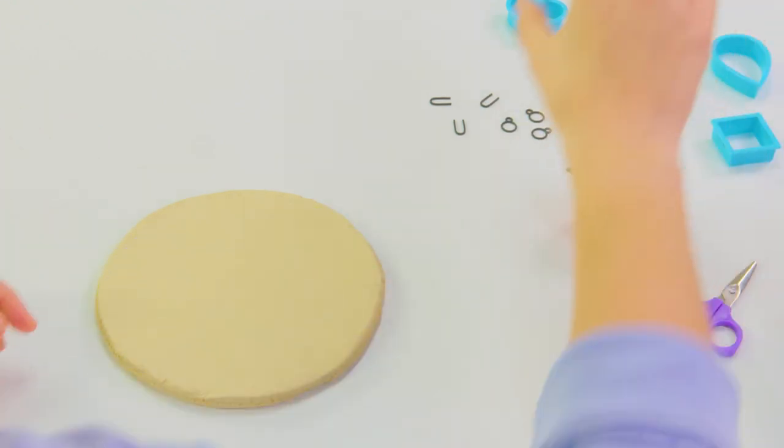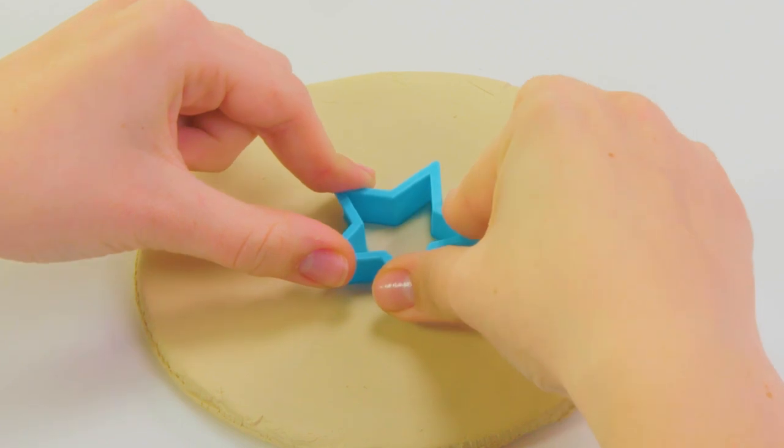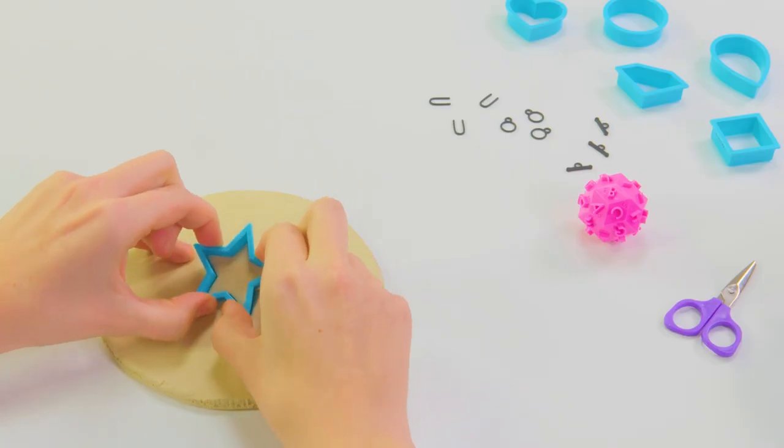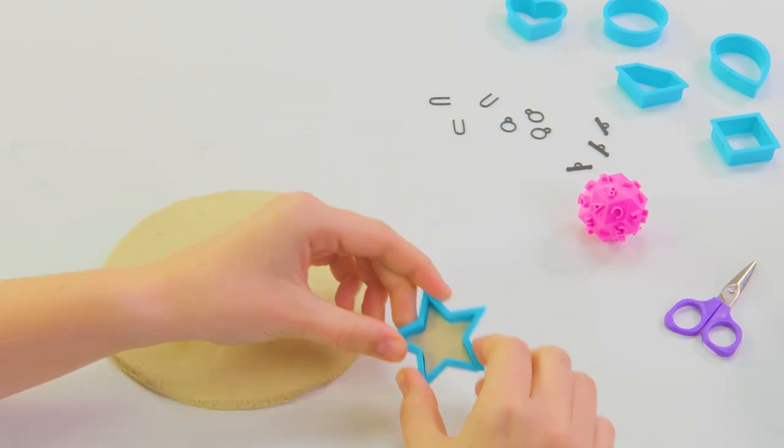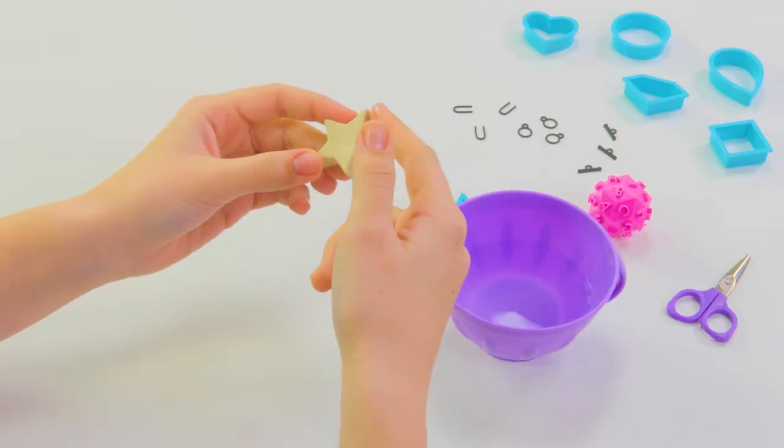Let's start by choosing a pendant shape. Pick a shape that you like and press the cutter firmly through the clay. To remove the shape, gently separate the cutter from the clay with your fingers. Don't worry if the edges aren't smooth. You can use some water to smooth the edges like this.